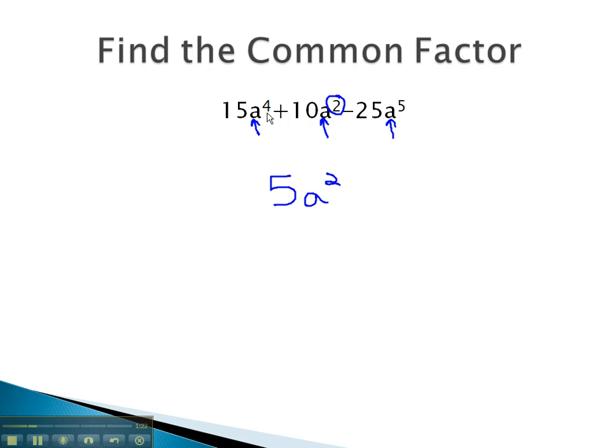This means each term has at least 2, possibly more, factors of a. 5a² is our greatest common factor.